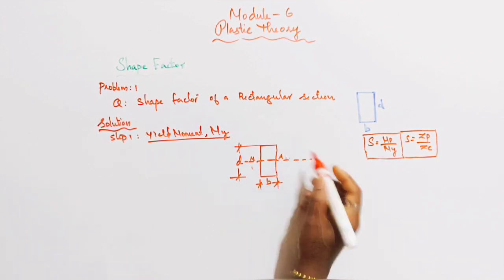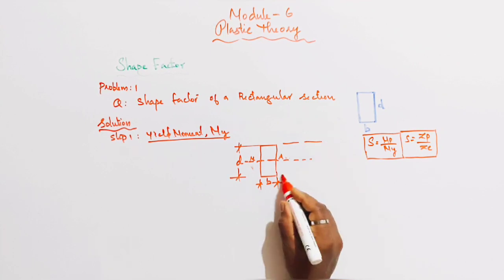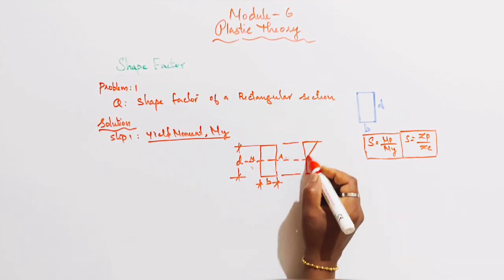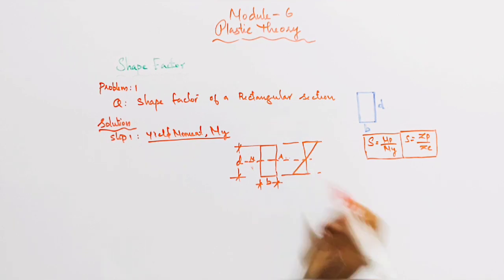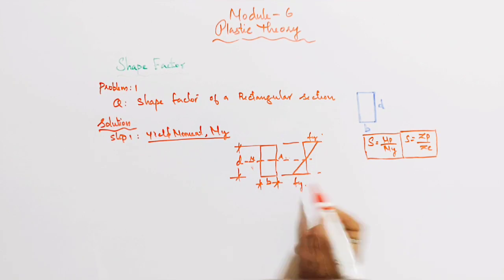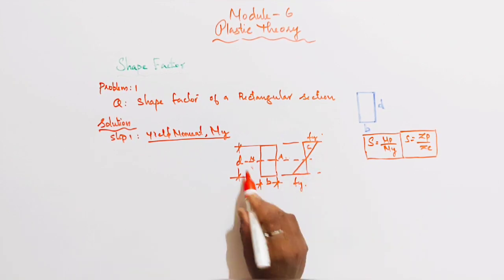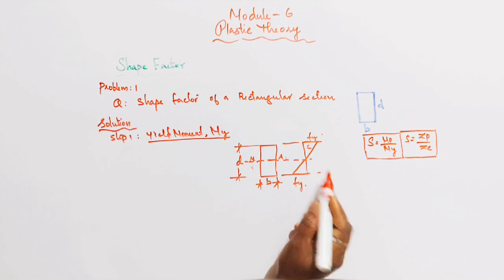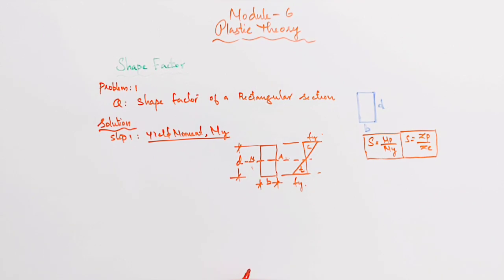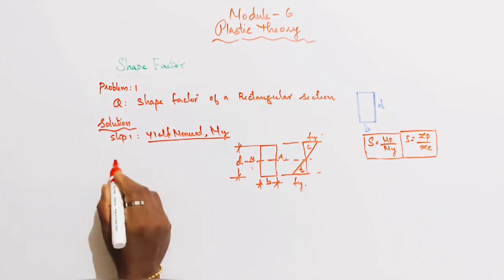Neutral Axis. Yield moment diagram. This is the diagram. Fy. And this is compression zone. Rectangular beam. And this is compression zone. Compression and tension. Rectangular section yield moment to find out.